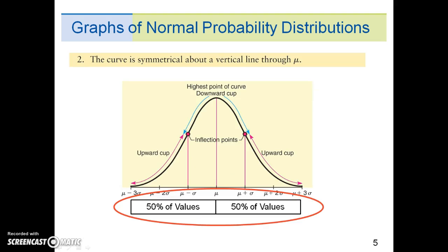Second, the curve is symmetrical about a vertical line through mu. So half of the values are to the right of the center line and half of the values are to the left of the center line.